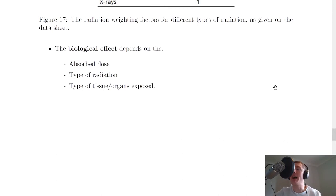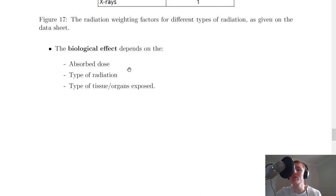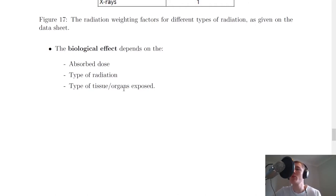There are three factors that the biological effect depends on, and you need to be able to remember these three things — they've come up in multiple choice questions before in exams. The biological effect depends on: the absorbed dose D, the type of radiation, and the type of tissue or organs exposed — whether it's brain tissue or somebody's hand or leg which absorbs the radiation.